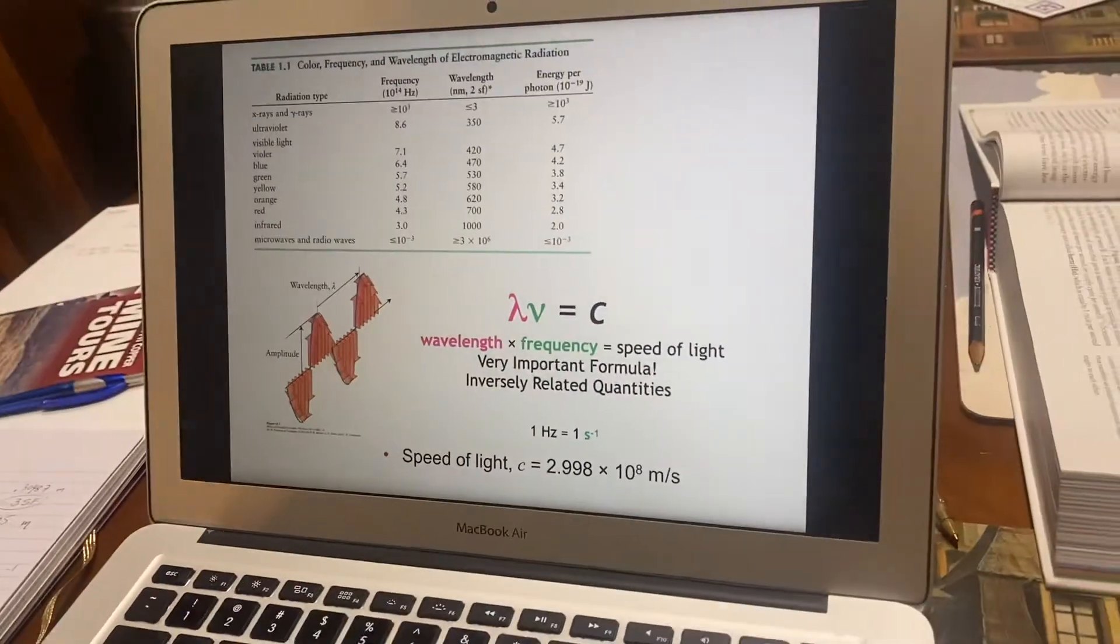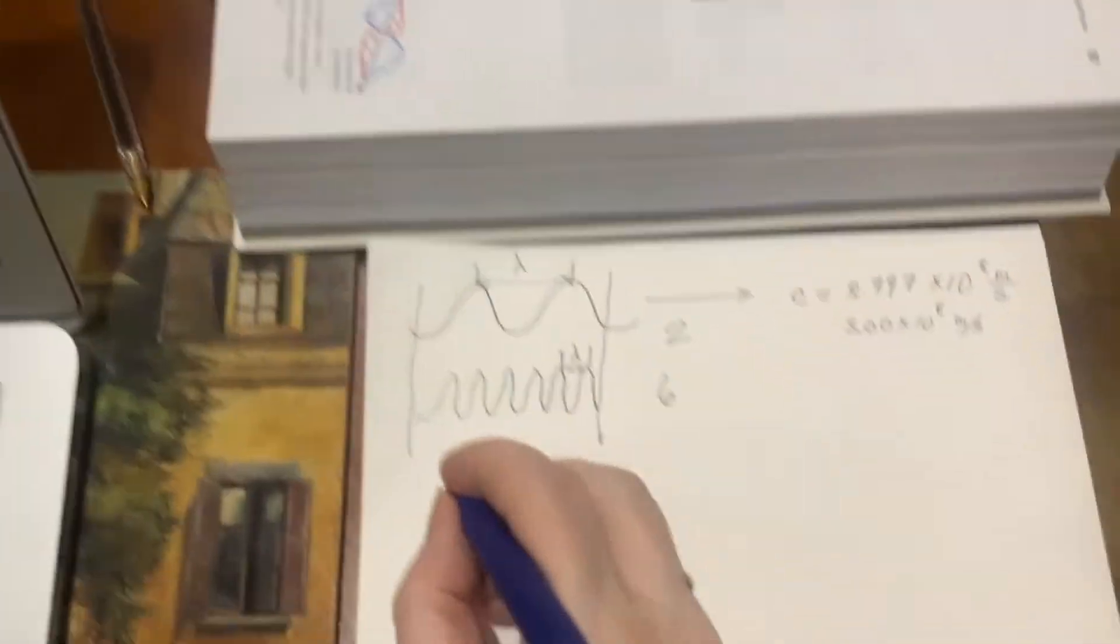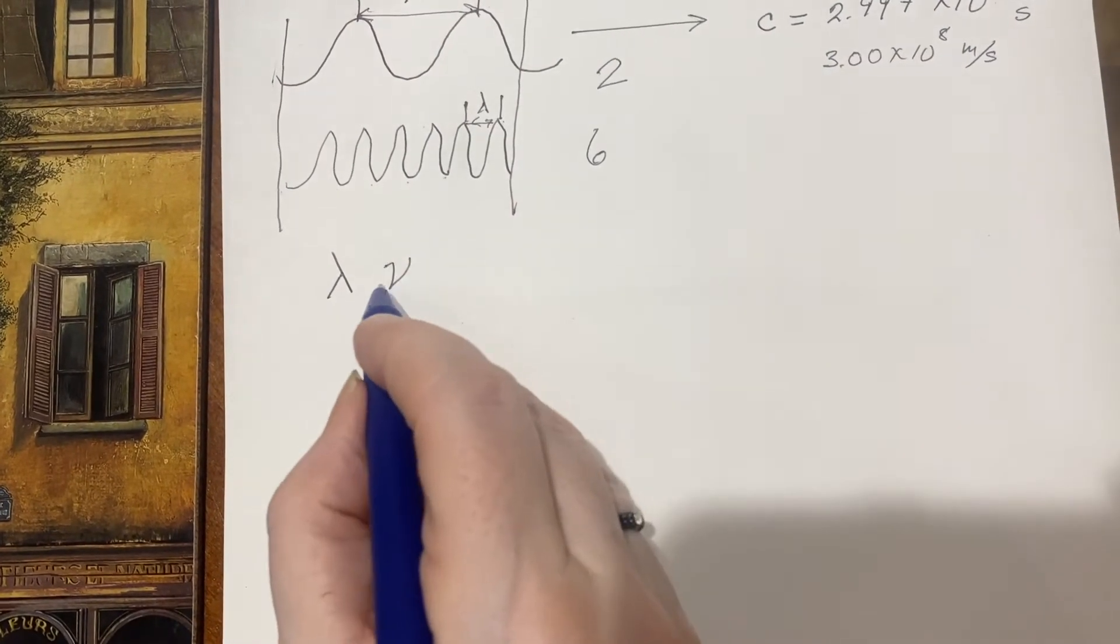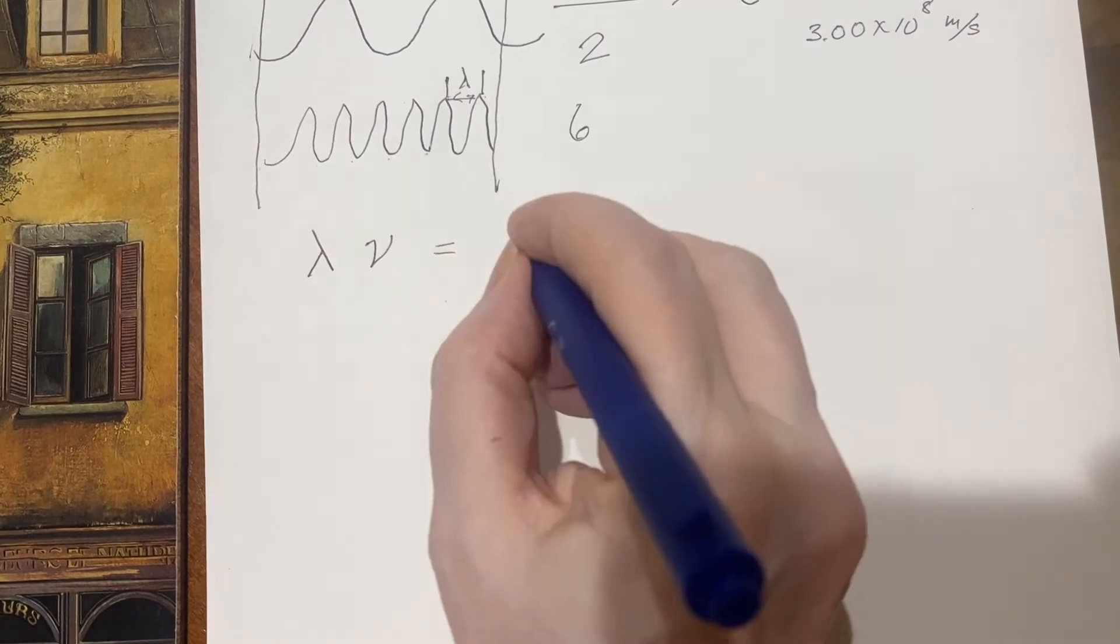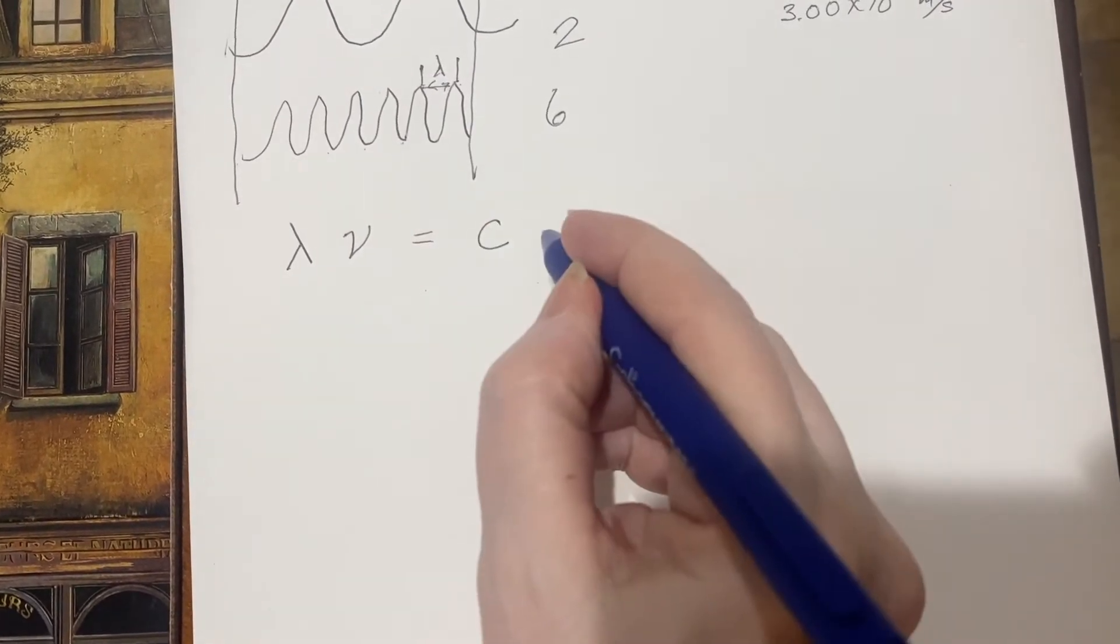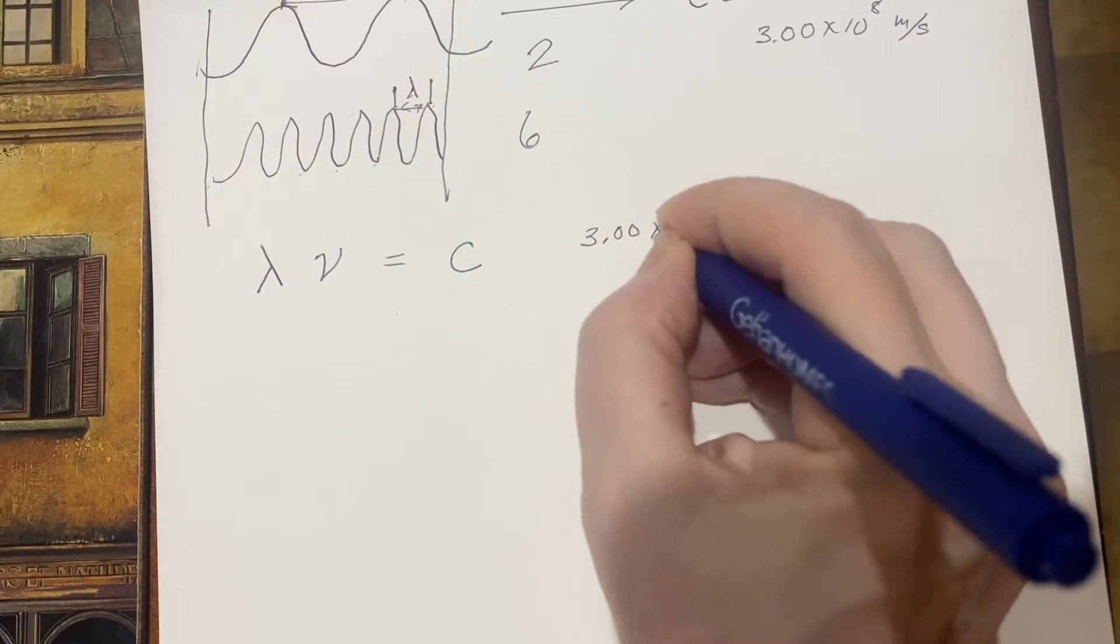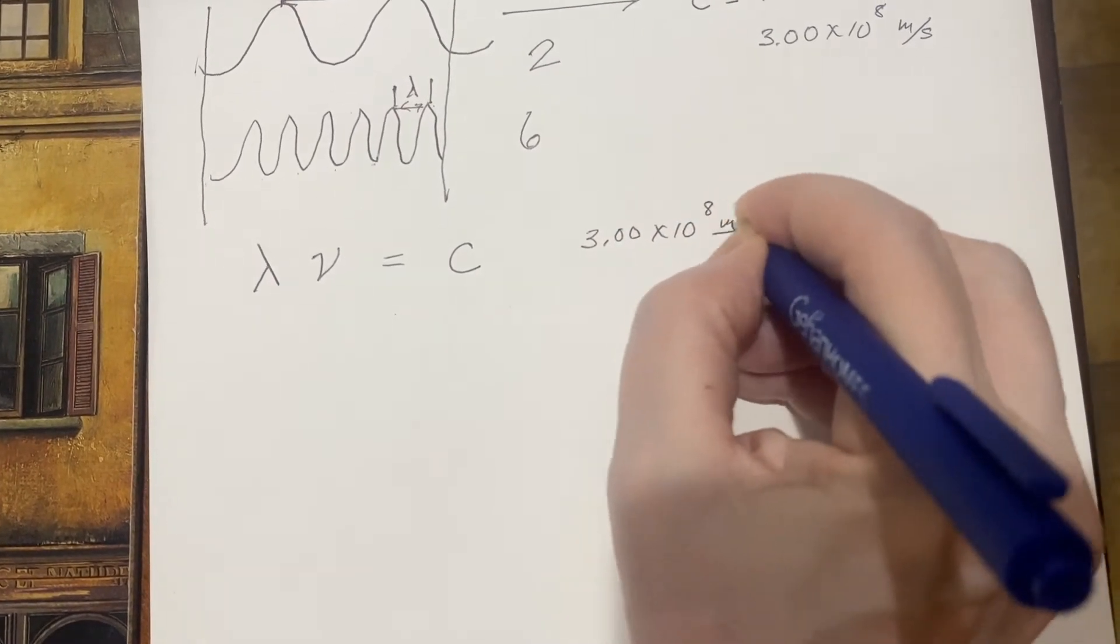I'd like to think about that a little more. So I'm going to write it down for a minute. Lambda and then nu. It looks like a V, but it's got a little serif on it. Equals C. This is a constant, like I said. We can often say it's just three times ten to the eighth meters per second.